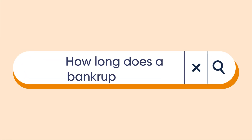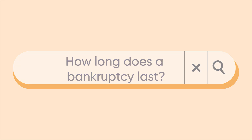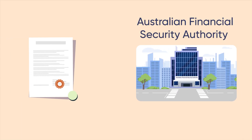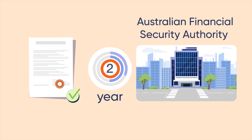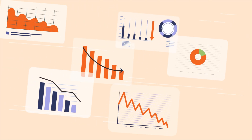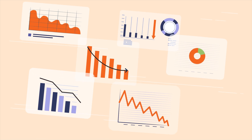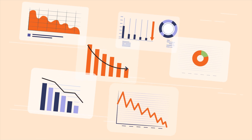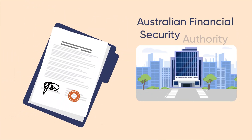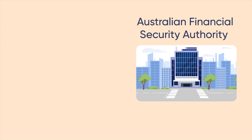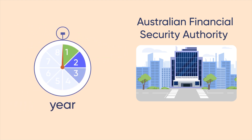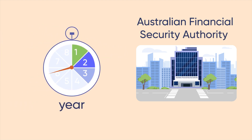How long does a bankruptcy last? The bankruptcy process normally lasts about three years and one day from the date the bankruptcy form is lodged with the Australian Financial Security Authority. However, a bankruptcy trustee may apply to the Australian Financial Security Authority to have the bankruptcy period extended to five or eight years if the individual fails to maintain their obligations during the bankruptcy.